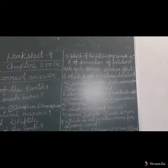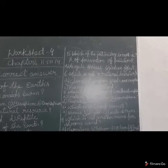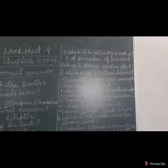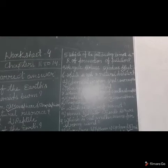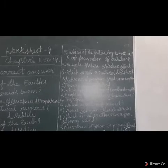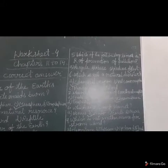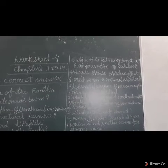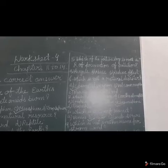Now question number 6, which is not a natural disaster? Options are chemical weapon, volcanic eruption, hurricane and the flood. As we know, chemical weapons are made by human being. And volcanic eruption, hurricane and flood are natural disaster. So the correct answer will be chemical weapon.